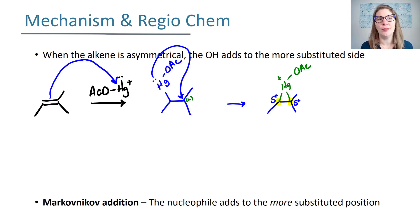But the side that's most capable of stabilizing that partial positive charge is the more substituted side, and that is where the nucleophile will attack. So your nucleophile will come in and attack from this side and open up that ring.